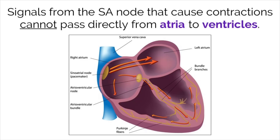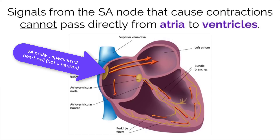Cardiac muscles contract through action potentials, but these action potentials are not stimulated by neurons or the nervous system. These cells beat on their own and are directed by the action potential sent from the SA node, which is a specialized heart cell, not a neuron. The medulla can control the pace of the SA node, but it does not actually cause it to depolarize. The SA node fires action potentials on its own.